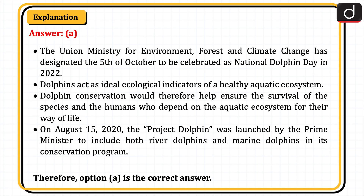Dolphins act as ideal ecological indicators of a healthy aquatic ecosystem. Dolphin conservation would therefore help ensure the survival of the species and the humans who depend on the aquatic ecosystem for their way of life. On August 15, 2020, Project Dolphin was launched by the Prime Minister to include both river dolphins and marine dolphins in its conservation program. Therefore, option A is the correct answer.